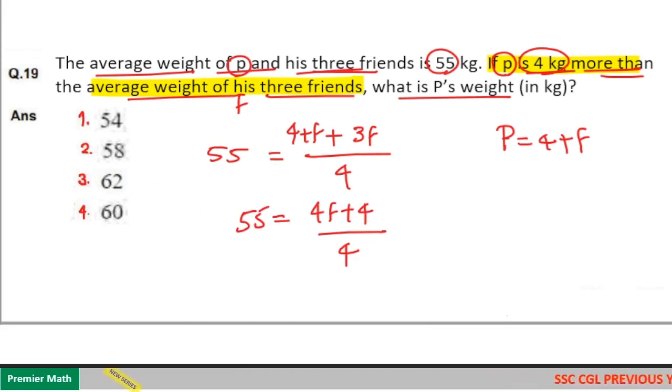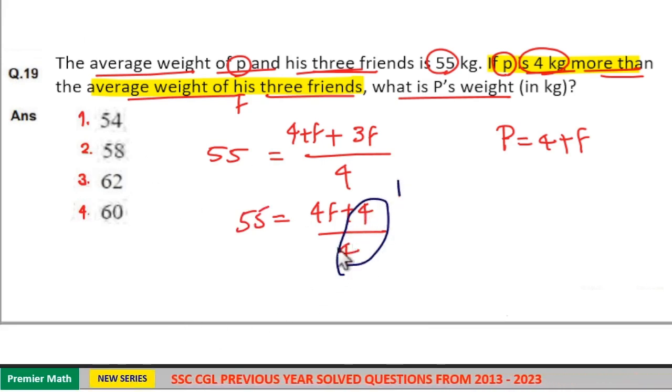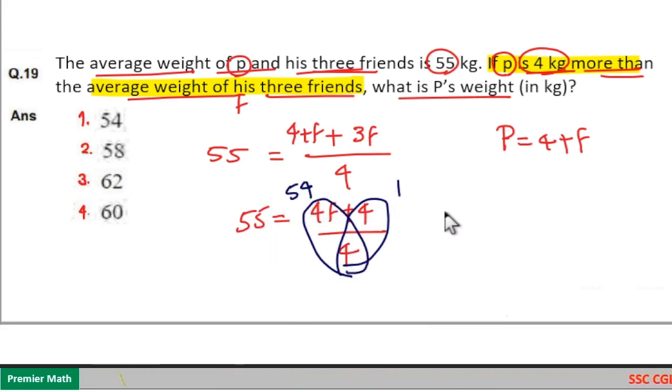Now this term is equal to 1. Same way, this term is equal to 4F by 4 is equal to 54 because 54 plus 1 is 55, which means 4F by 4 is equal to F.